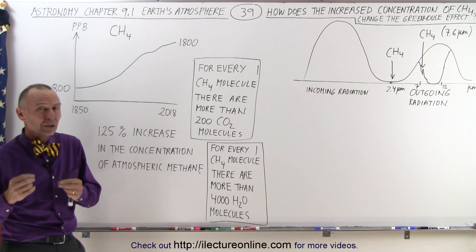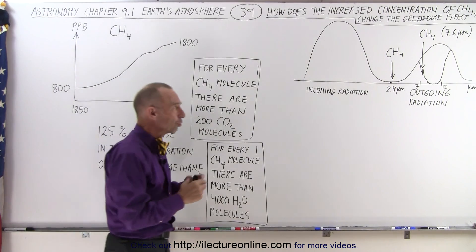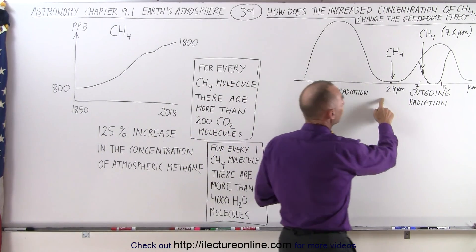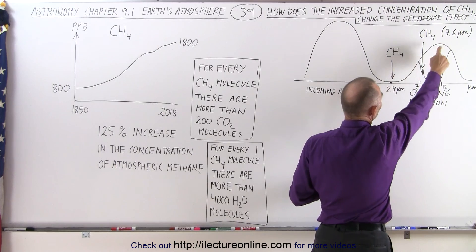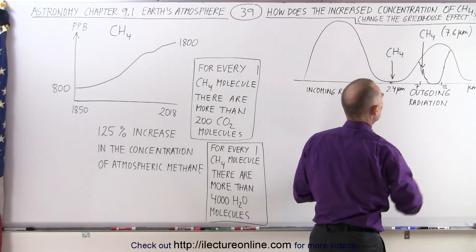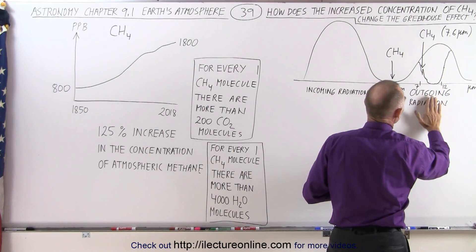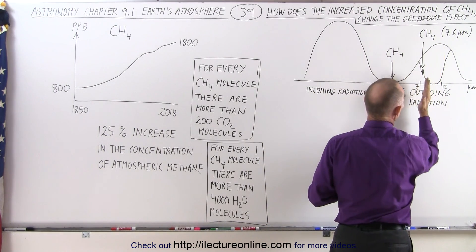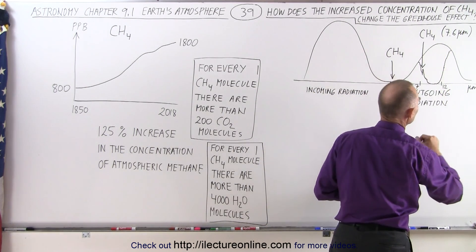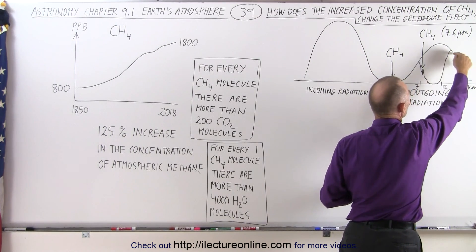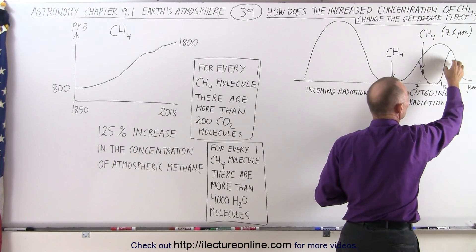And then let's take a look at where methane holds back the radiation. There's two main places. One happens at about 7.6 micrometers, and the other one at 2.4 micrometers. Remember there's this window where much of the radiation gets back to space, which is somewhere between 7 and 12 micrometers. Carbon dioxide, together with water vapor, does a lot of holding back this radiation.